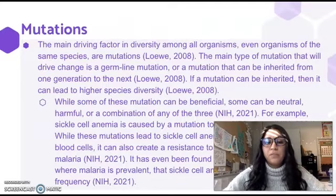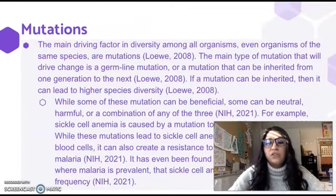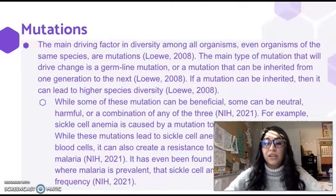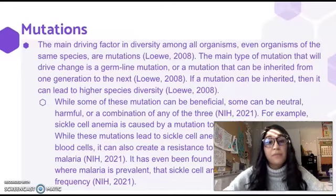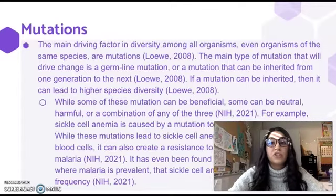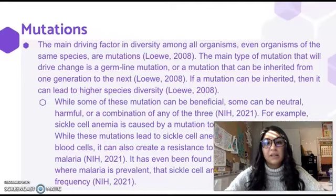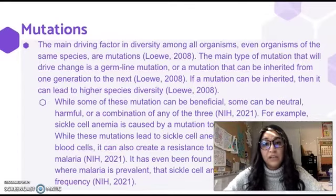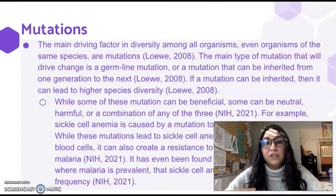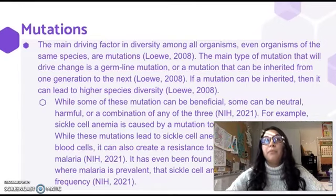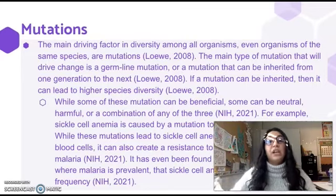The main driving force behind that difference is mutations. The driving factor in diversity among all organisms, even organisms of the same species, is mutations. The main type of mutations that drive change are germline mutations — mutations that can be inherited. In humans, these changes would have to happen in sex cells, specifically sperm or egg. If mutations can be inherited, they can lead to higher species diversity, as those mutations can spread through a population via multiple lines of pedigrees and drive change.